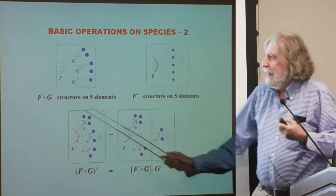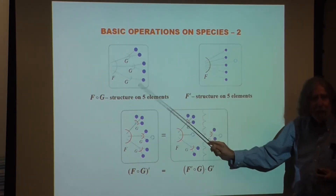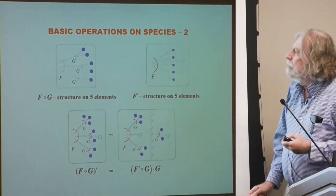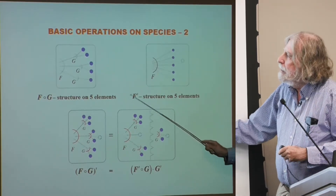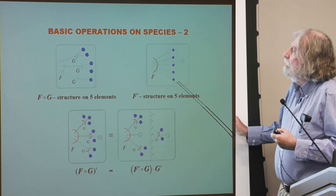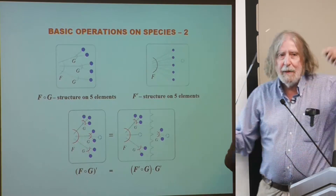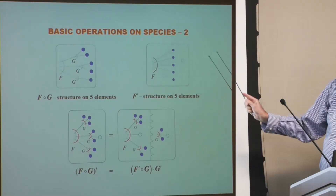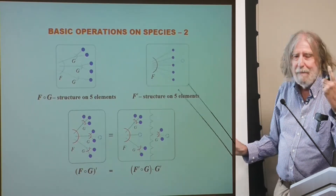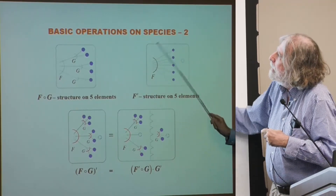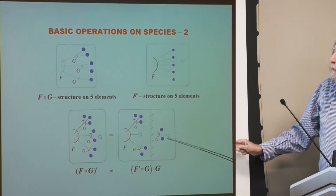F of G: an F-structure of G-structures is an F-structure put on disjoint G-structures — this is called the F of G structure. F prime is differentiation. You have any class of structures, any species, and you can make a new species called F prime, the derivative of F. To make an F prime structure on a set of five elements, you add a phantom extra element and put an F-structure on the augmented set. This is called an F prime structure on the original points. The underlying set of this F prime structure is the original elements, not the extra one. And the chain rule works.